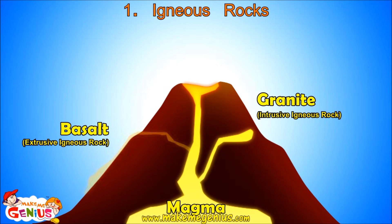This cooled-down lava forms basalt rocks. Basalt rocks are also igneous rocks. So there are two main types of igneous rocks: ones that are formed when magma comes out, which are basalt, and others when magma cools down under the surface of the Earth — these are granite rocks.